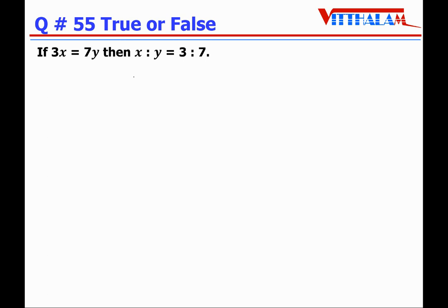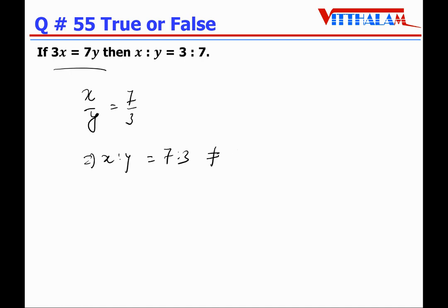Question 55: 3x = 7y implies x:y = 3:7 — False. From 3x = 7y, we get x/y = 7/3, therefore x:y = 7:3, not 3:7. The given statement is False.